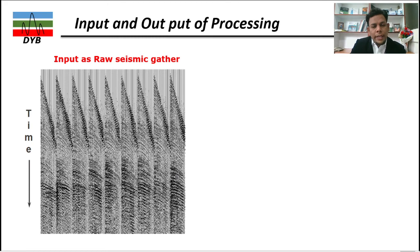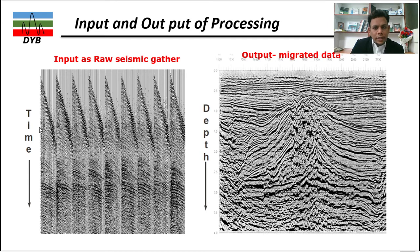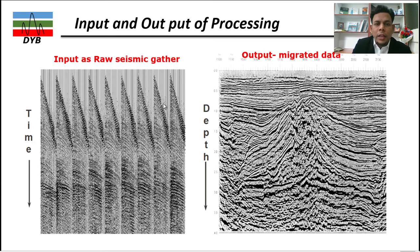This is the actual seismogram recorded in the field. With a shot and multiple receivers, you cannot see any subsurface features before processing. After all processing steps, you can identify layers, faults, anticlines, and the basement. This shows the raw input seismic gather on one side and the output migrated dataset on the other — all the seismic processing steps happen in between.